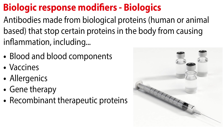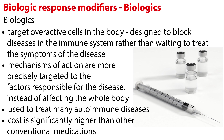Biologics are antibodies made from biological proteins that stop certain proteins in the body from causing inflammation. Biological products include a wide range of products such as blood and blood components, vaccines, allergenics, gene therapy, and recombinant therapeutic proteins. The biologics discussed here are immunosuppressive drugs that have had a profound impact on the treatment of many diseases, which in most cases have had no effective therapies available. Biologics target overactive cells in the body and are designed to block diseases in the immune system rather than waiting to treat the symptoms. Their mechanisms of action are more precisely targeted to the factors responsible for the disease, instead of affecting the whole body.